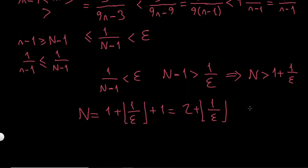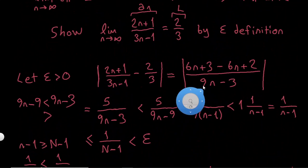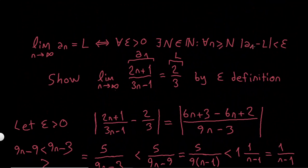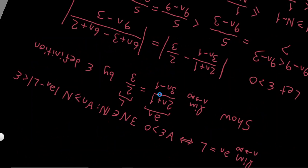But the thing is that if you found that this N should be positive, this is the first point, and it should be an integer, and it should just satisfy this an minus L is less than epsilon condition. So that's the end of it. So yeah, that's all.